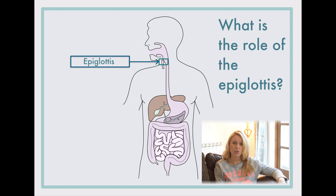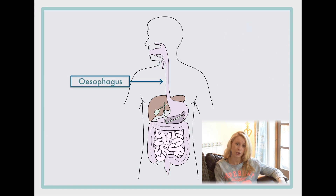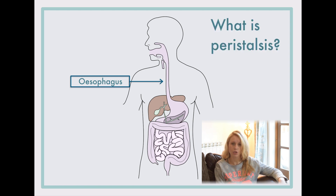The esophagus is a muscular tube, and there are waves of contraction of muscle in that tube that help push the food down and into the stomach — that's called peristalsis.